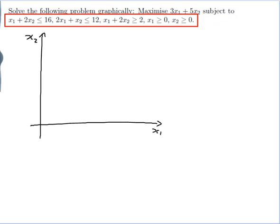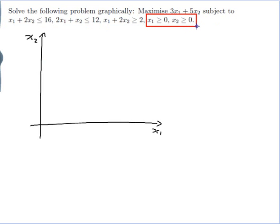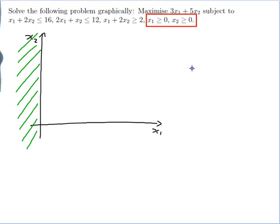Starting with x1 is greater than or equal to 0 and x2 is greater than or equal to 0. I often find it easier to cross out the bit I don't want. I want x1 to be positive so I'll cross out the bit where x1 is negative. And I want x2 to be positive so I'll cross out the bit where x2 is negative. That makes it easier because I only have to draw my graph in this corner here.